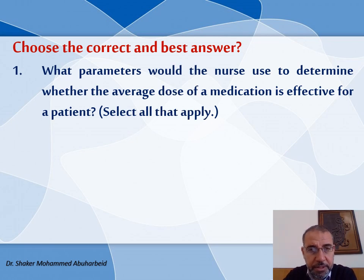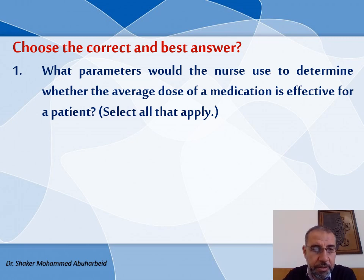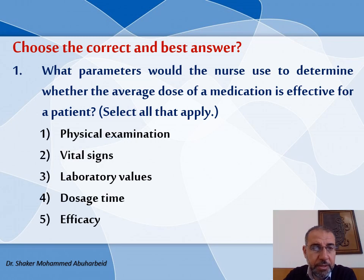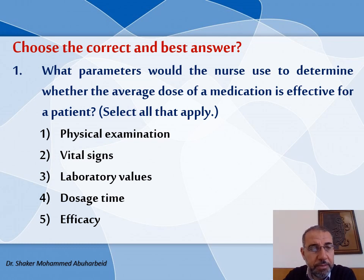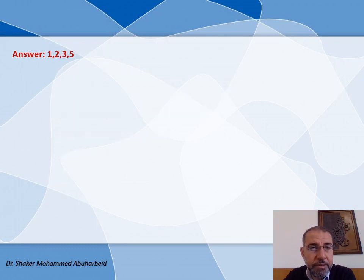Choose the correct and best answer. What parameters would the nurse use to determine whether the average dose of medication is effective for a patient? Select all that apply. The options are: first, physical examination; second, vital signs; third, laboratory values; fourth, dosage time; and fifth, efficacy.